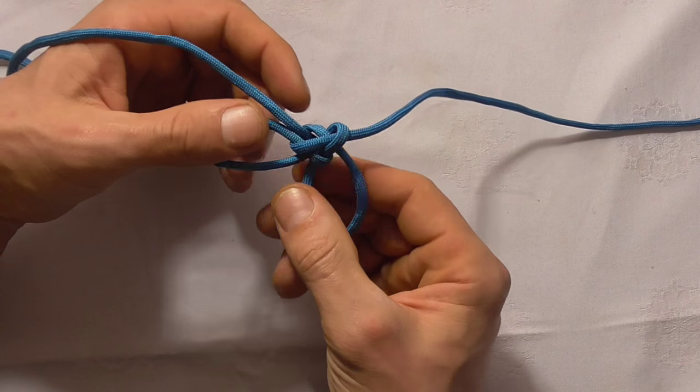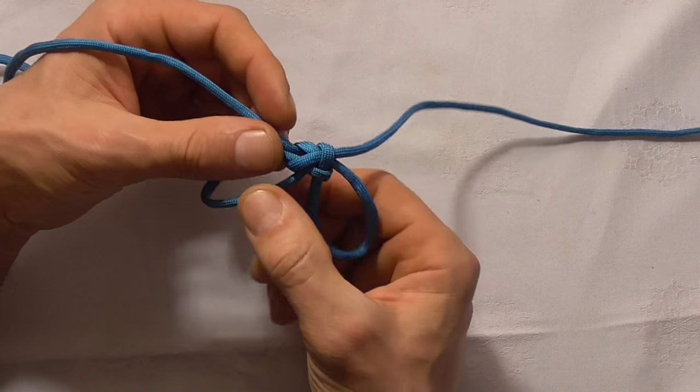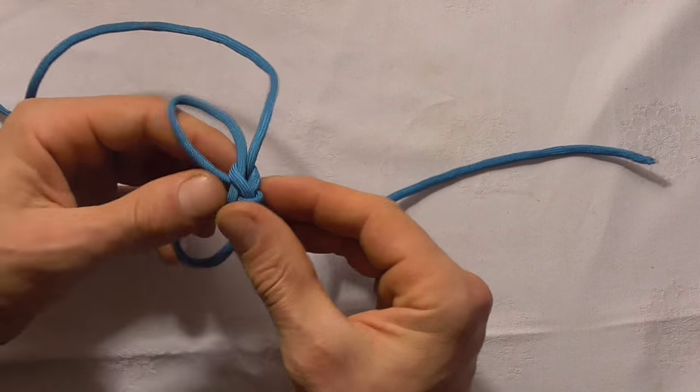Don't tighten it all the way yet because we have to form our third petal. I want to make these two loops around about the same size.